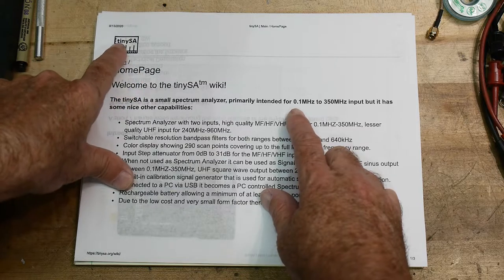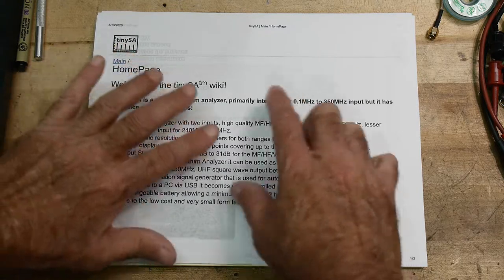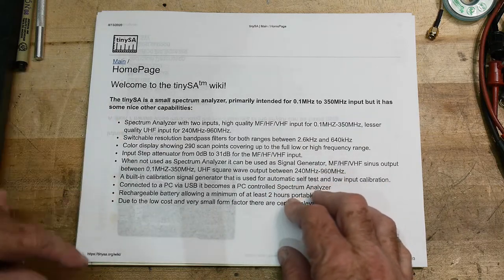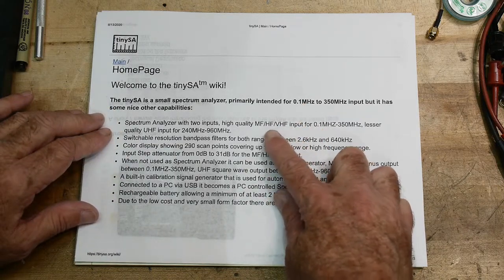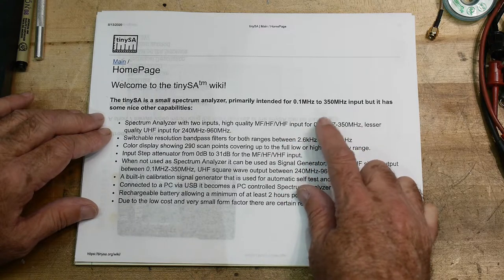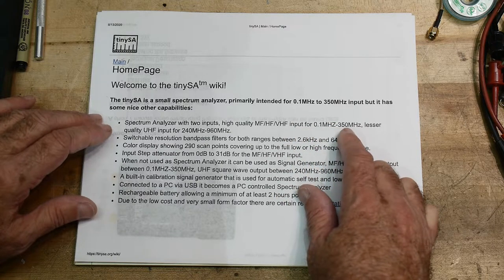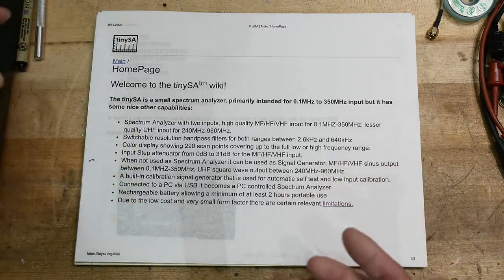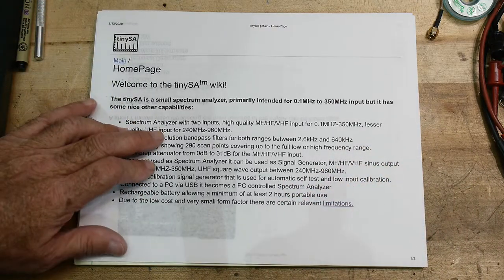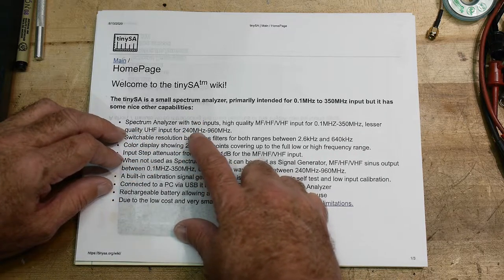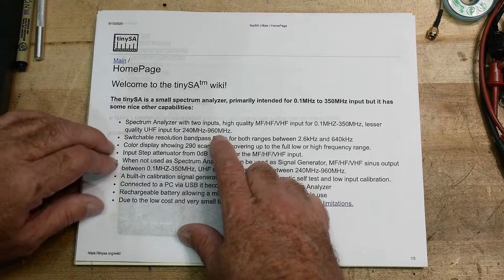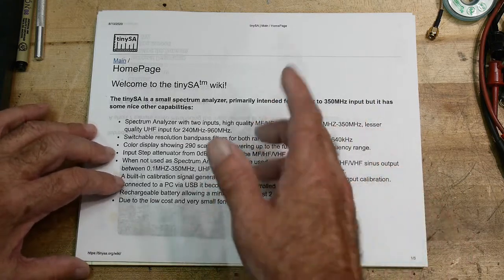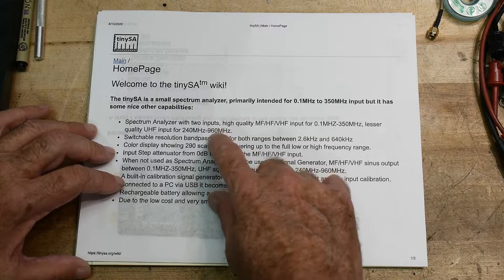There's a wiki page. If you go to tinysa.org, you can find the wiki page and read all about it. So I'm not going to bother reading all of this. But basically it's a spectrum analyzer that goes between 100 kHz and 350 MHz. And then there's a kind of a hack, a little bit lesser quality, you can get from 240 MHz to 960 MHz. So the low input on the TinySA does this 350, and then the high input does this 960 MHz.